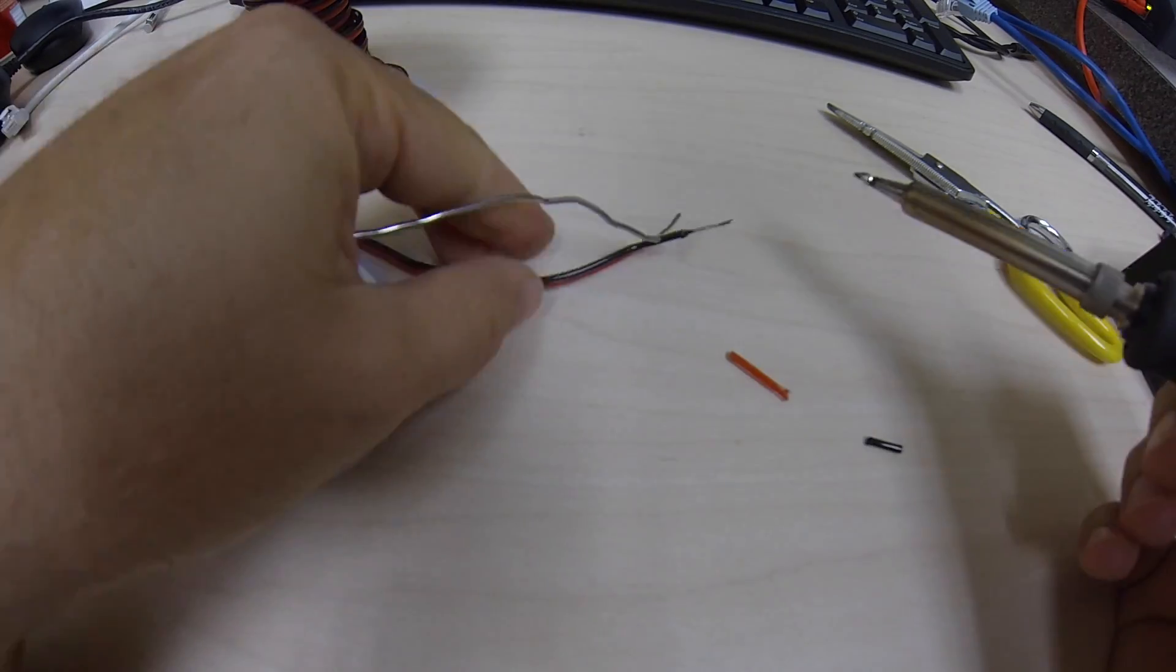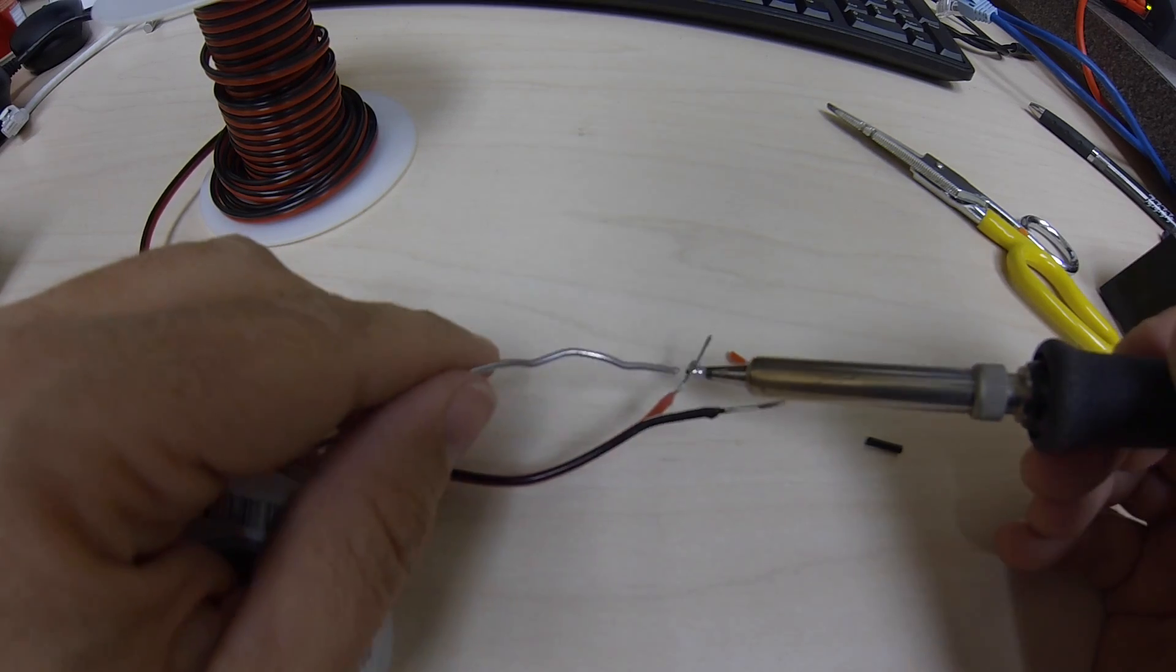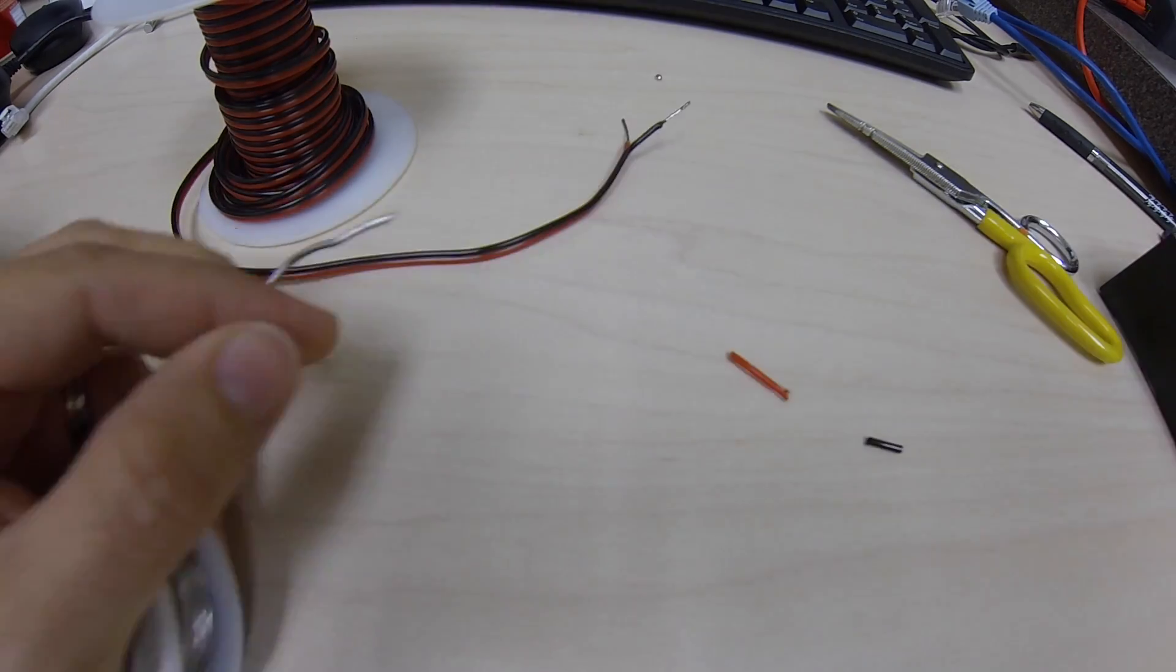This is the primary power lead that goes in. It'll go to our 48 volt power supply. I'm tinning these so that they will punch down in the connector.